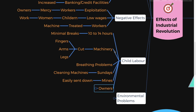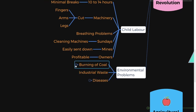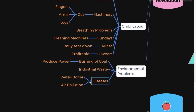The only people who benefited from all this torture were the owners. The Industrial Revolution also caused a lot of environmental problems. There was a lot of burning of coal to produce power, industrial waste was disposed everywhere, there were waterborne diseases, and at the same time there was a lot of air pollution.